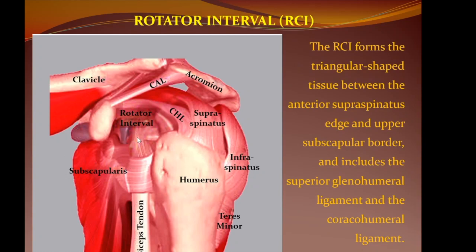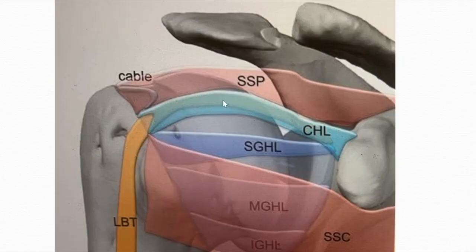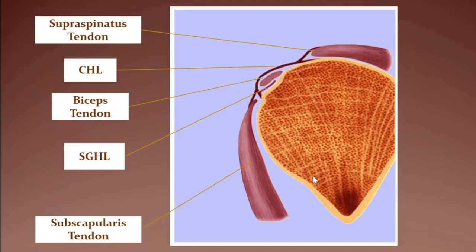This is the biceps tendon traversing through it. Another model showing the same area: coracoid process, supraspinatus, subscapularis — this is the triangular area. The main contents seen here are the biceps pulley, traversing between the coracohumeral ligament above and the superior glenohumeral ligament below. Another picture shows the biceps originating from its intra-articular position traversing through a capsuloligamentous structure, coming out between the supraspinatus above and the subscapularis below.